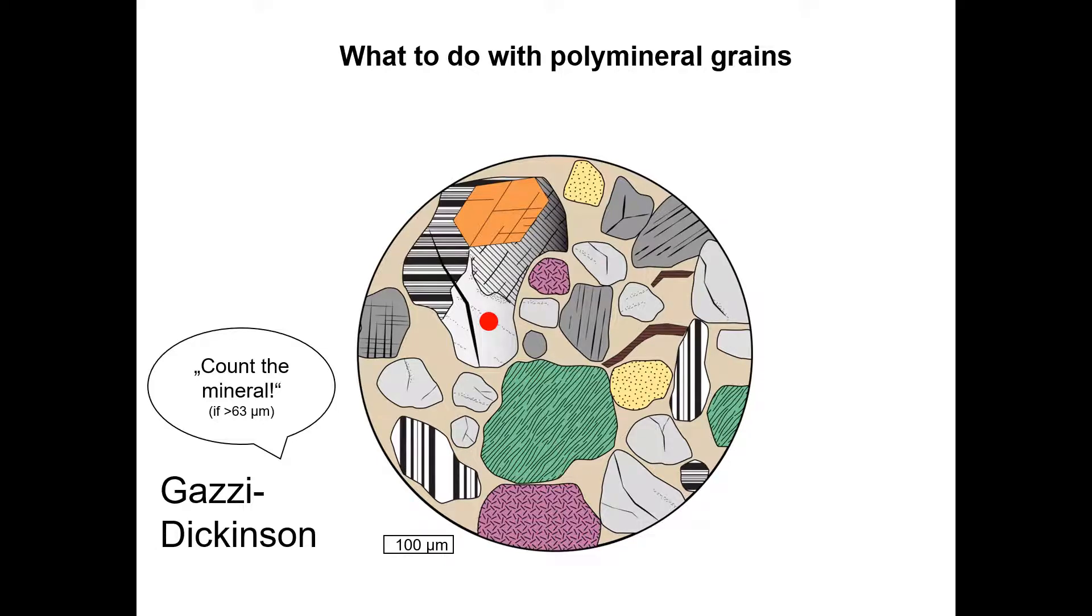Therefore, all minerals that are larger than 63 microns will be counted as the type of mineral, which in this case is quartz. Minerals smaller than 63 microns that are part of a larger composite grain will be counted as the lithic fragment they belong to.